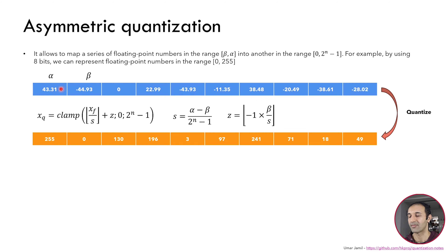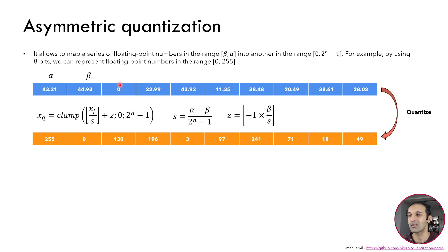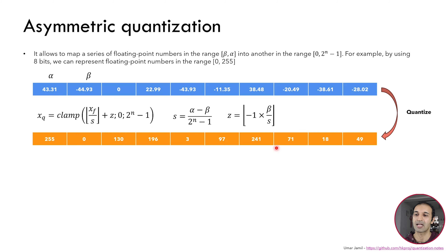What we can see: with asymmetric quantization, the biggest number is always mapped to the biggest number in the output range, and the smallest number is always mapped to zero in the output range. The zero in the original vector is mapped into the z parameter — so this 130 is actually the z parameter — and all the other numbers are mapped into something between 0 and 255.